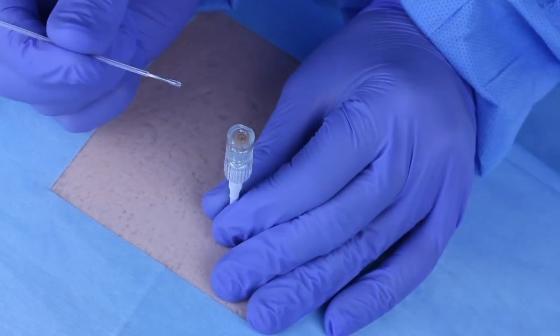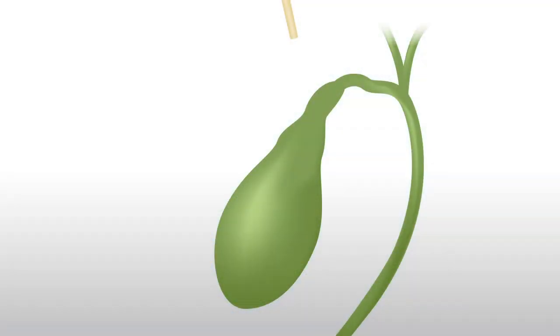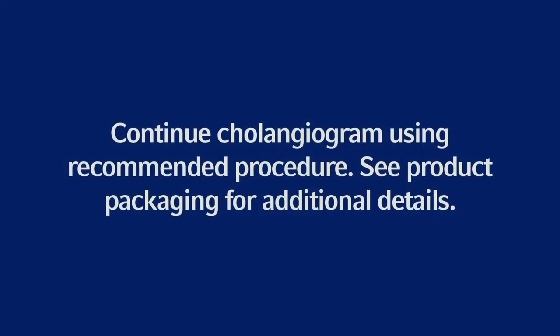Insert taut cholangiogram catheter through the taut introducer until visible within the peritoneal cavity. Manipulation of the catheter and introducer should be monitored under direct visualization using the laparoscope. Continue cholangiography using recommended procedure.